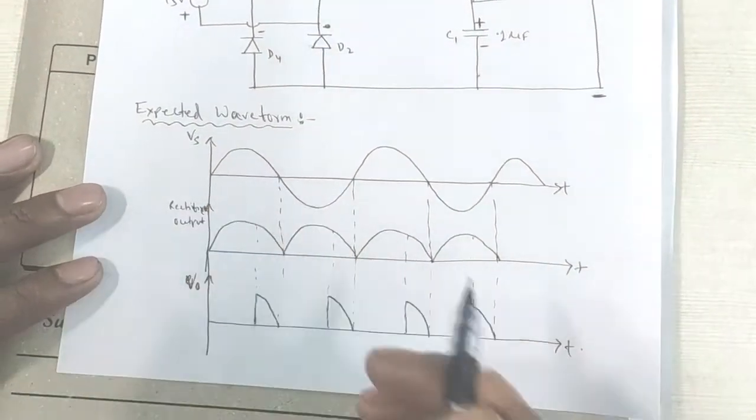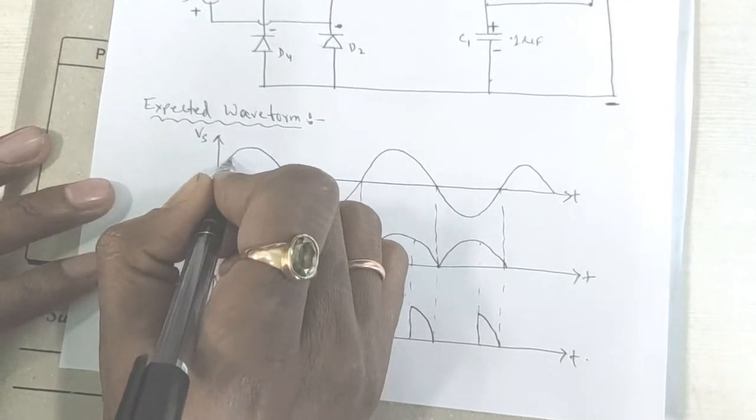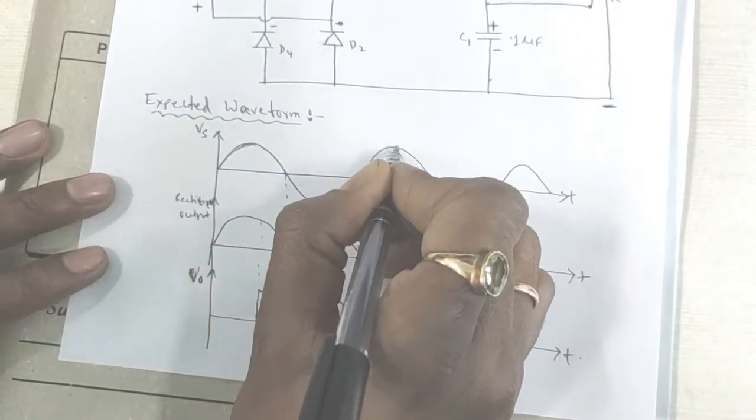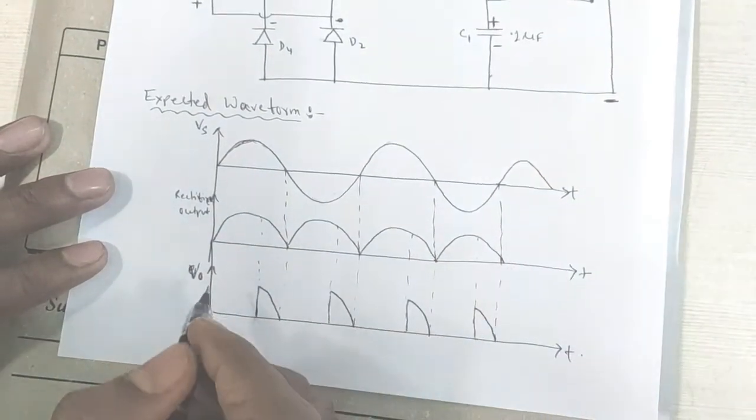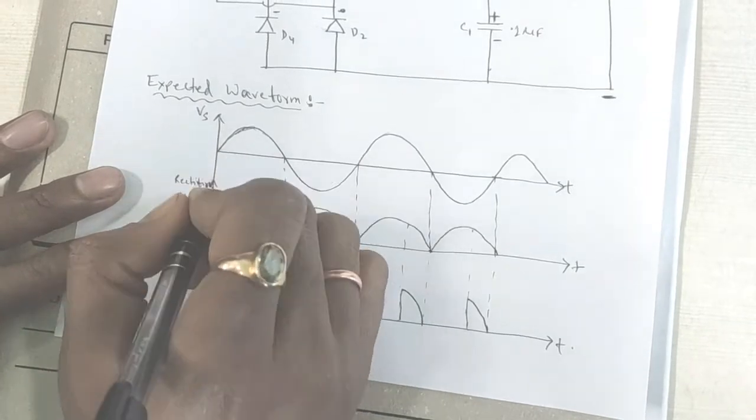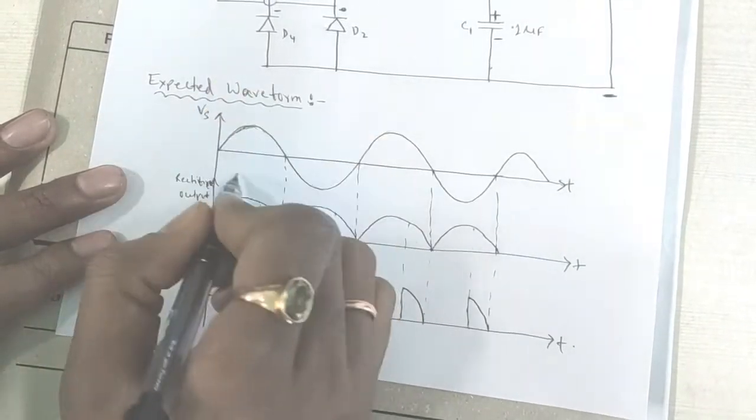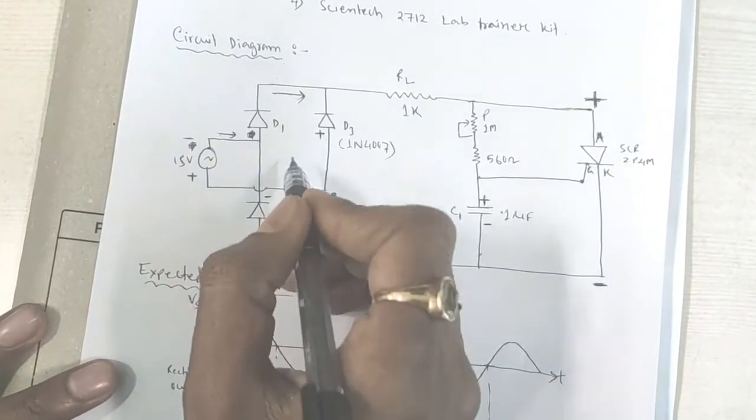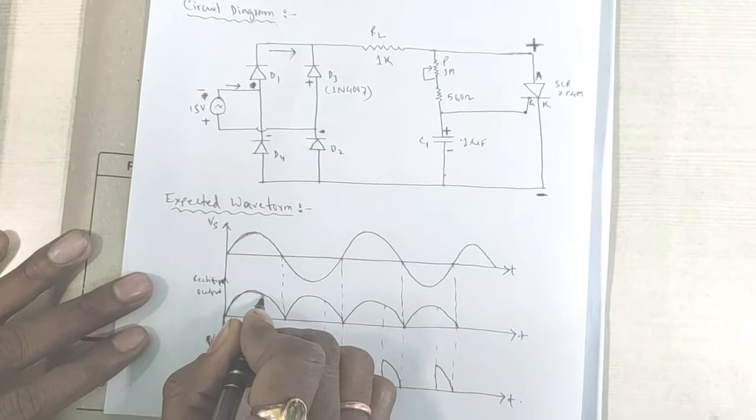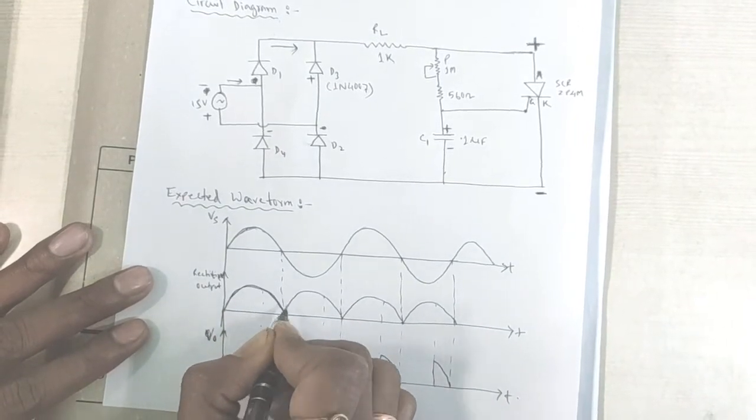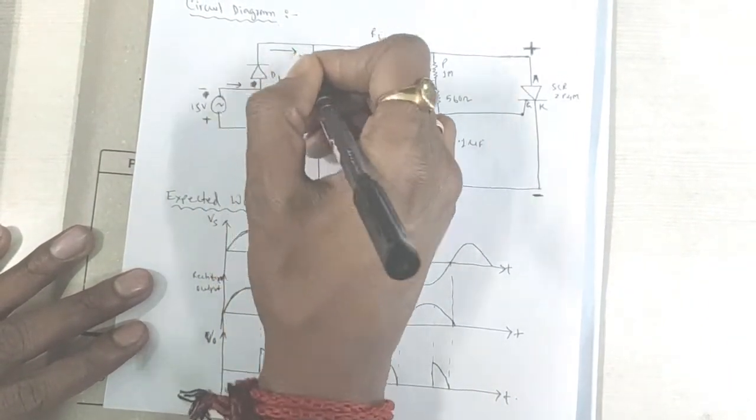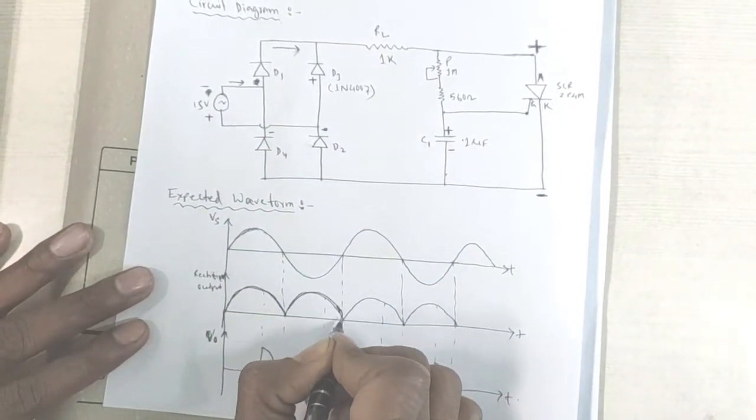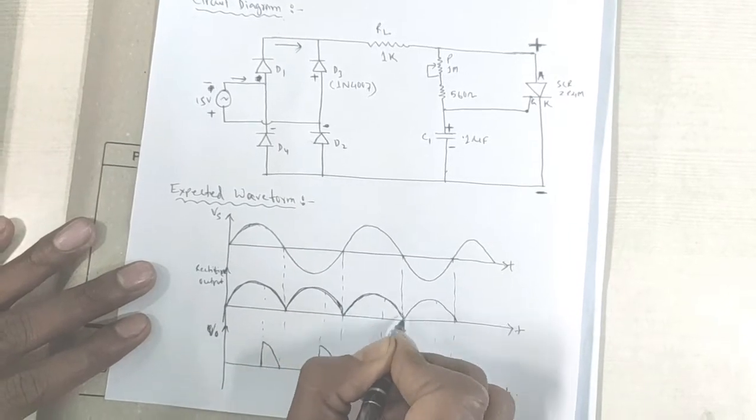Now, see here expected waveform. Initially, we have applied the sine wave as an input. Then for the full wave, we have get this rectified output. For the positive half cycle, we are getting this output. And for the negative half cycle, it is also in the positive forward bias. So that, we are getting this type of output. Like this. This is the full wave rectified. Not triggered.